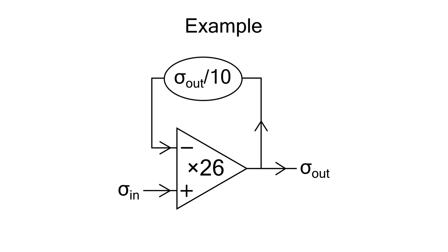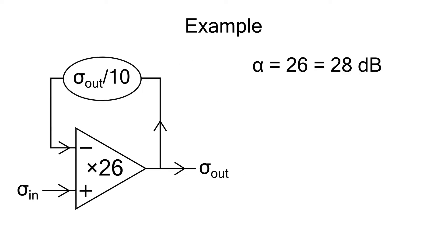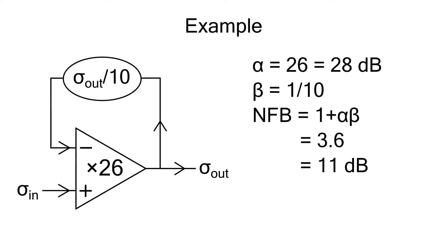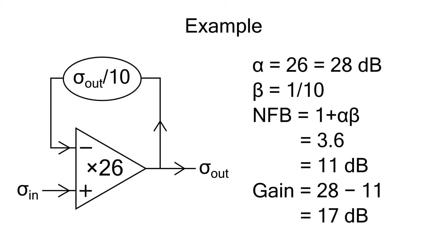Consider an amplifier with a gain of 26, and we're taking 1/10th of the output and subtracting it from the input. So alpha is 26 — that's 28 dB — and beta is 1/10. The negative feedback is 1 plus alpha·beta, which in this case is 3.6, about 11 dB. The gain is then 28 dB minus 11 dB, which is 17 dB.